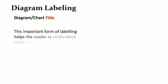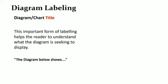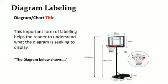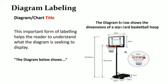Diagram labeling includes the following: Diagram or chart title. This important form of labeling helps the reader to understand what the diagram is seeking to display. This is a typical example of what a diagram or chart title would look like. And here is a practical example. If your SBA involves the dimension of a basketball hoop, then the most appropriate title would look like this.